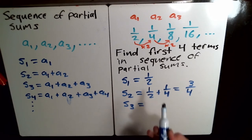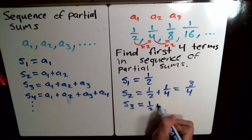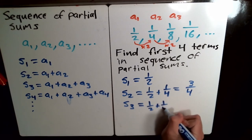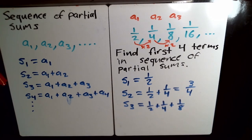S3, would we add the first three terms together? So, we do one half plus one fourth plus the third term is one eighth. So, we add those together.